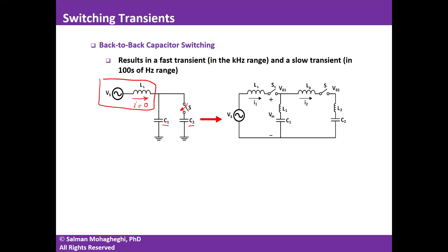On the right side, I have an equivalent circuit with source voltage V_S, source inductance L_S, and two capacitor banks. I've added stray inductances L1 and L2 in series, and L_B representing the inductance of the bus bar connecting C1 and C2. Because switching occurs at zero crossing of current, I1 is zero, so I can assume the left side is disconnected from the right side.